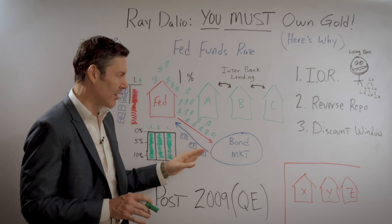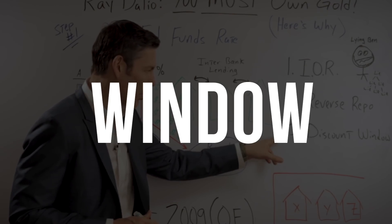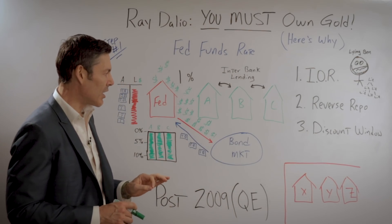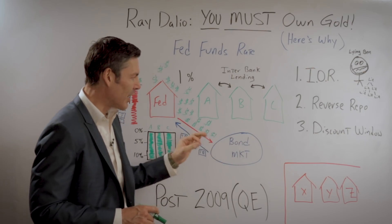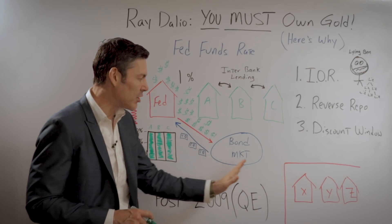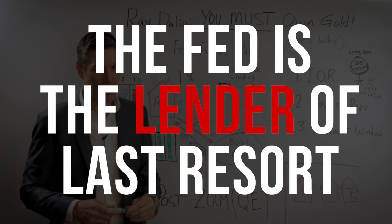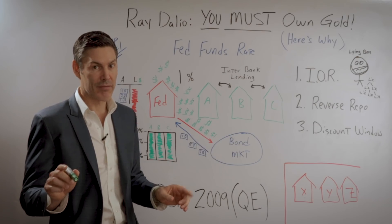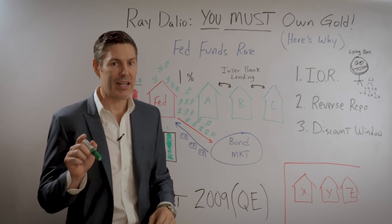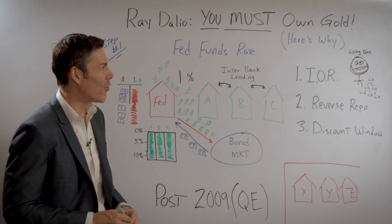There's another thing you need to understand to tie all of this together: the discount window. This is the Fed saying to all banks inside and outside of the system: if you get into trouble and no other entities will lend to you in the open market, you can come to the discount window, give us collateral, and we will give you however much money you need. The rate will be a little bit higher than the Fed funds rate, making the Fed the lender of last resort. Sounds like a good plan, but this comes back to bite them in the end.